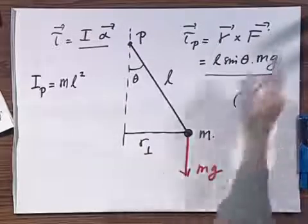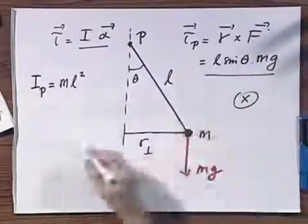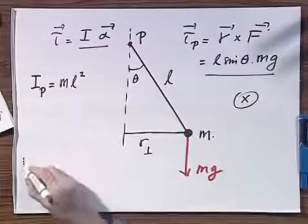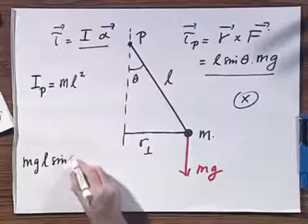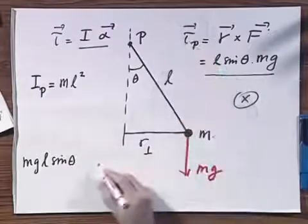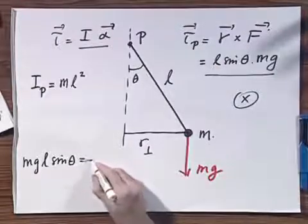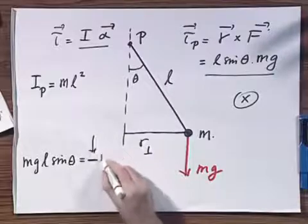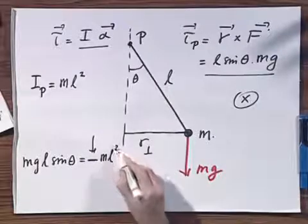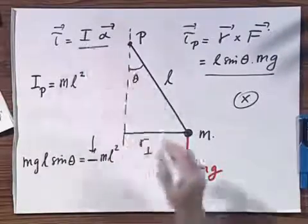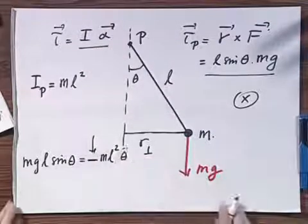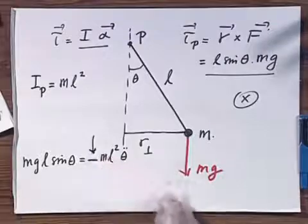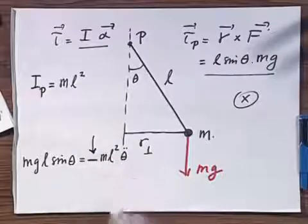I therefore have to introduce a minus sign, and so I get Mg times L times the sine of theta, which is the magnitude of the torque, equals minus ML squared, which is the moment of inertia about that point P, times θ double dot. This minus sign is crucial. It gives it the restoring characteristics.